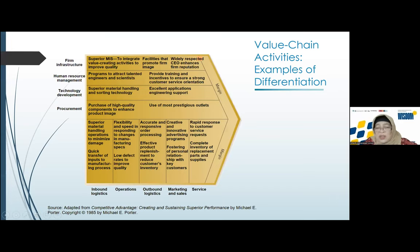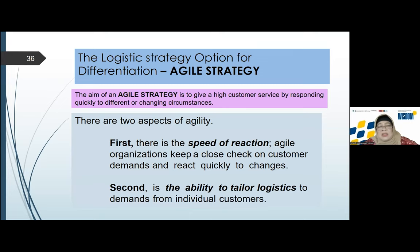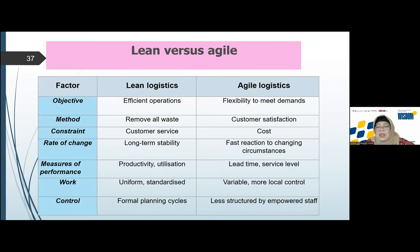Right now, we cannot have only one strategy because the situation is agile. We need an agile strategy. There are two aspects: first is speed of reaction, second is the ability to tailor logistics. We need both lean logistics and agile logistics — lean is concerned with efficiency, while agile logistics is about flexibility. We can see the differences in their objectives, methods, and functions.